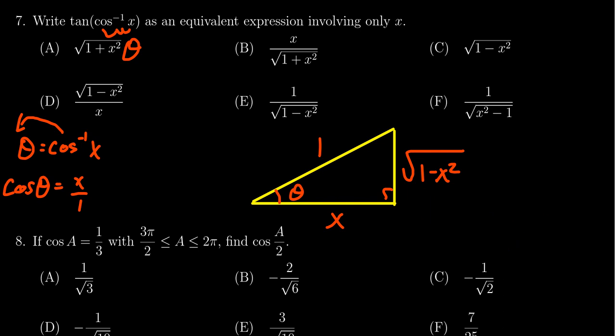Again, just using the Pythagorean equation. So with this triangle, we can then label any of the trig ratios. Which trig ratio do we want?